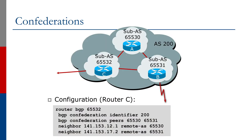As you might imagine, migrating from a full mesh IBGP setup to using BGP confederations is quite a considerable task. BGP on each and every router has to be moved out of AS 200, in this case, to one of the sub-AS autonomous systems. So it is a major effort and can be highly disruptive for the network when the operator makes this change.